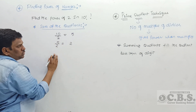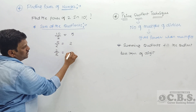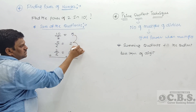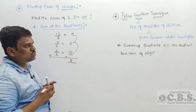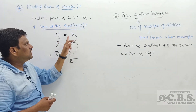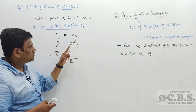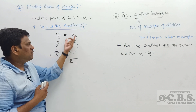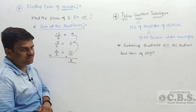Continuing: 2 ÷ 2 = 1. Since 1 is less than 2, we stop. Summing all quotients: 5 + 2 + 1 = 8. So the power of 2 in 10! is 8. This is the sum of quotients technique — keep summing quotients until the last quotient is less than the given digit.